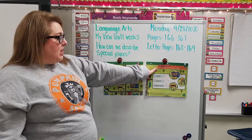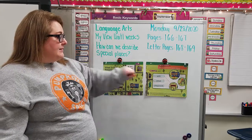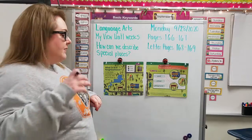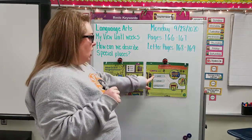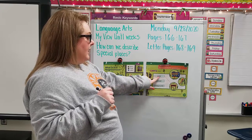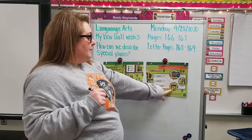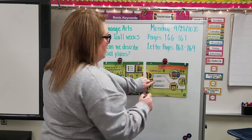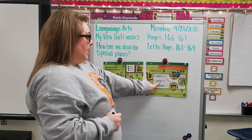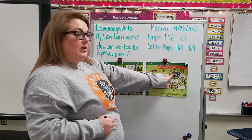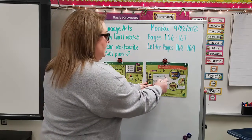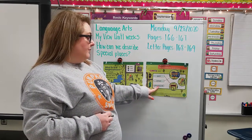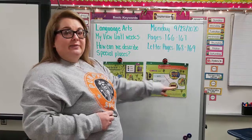How can we describe special places? Take your pencil — I'm going to take my crayon — and the first one says 'park.' P-A-R-K. Draw a line from the word park to the picture of the park. The next one is 'school' — match this word school to the picture. And the last one is 'playground' — draw a line from the word playground to the picture of the playground.